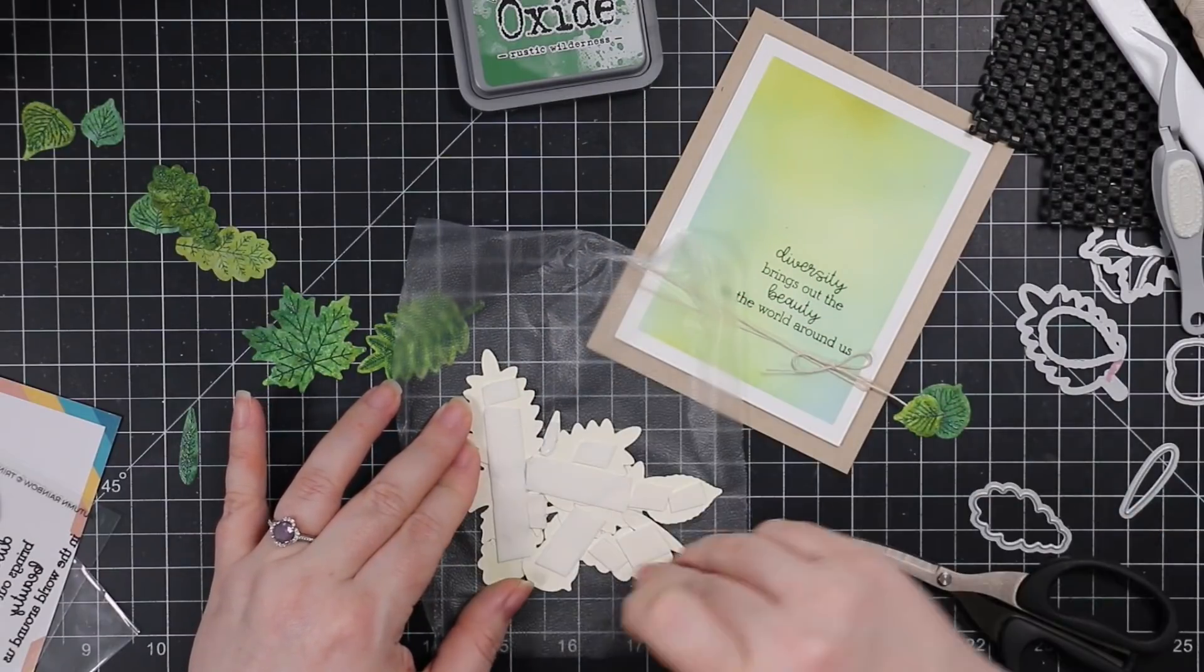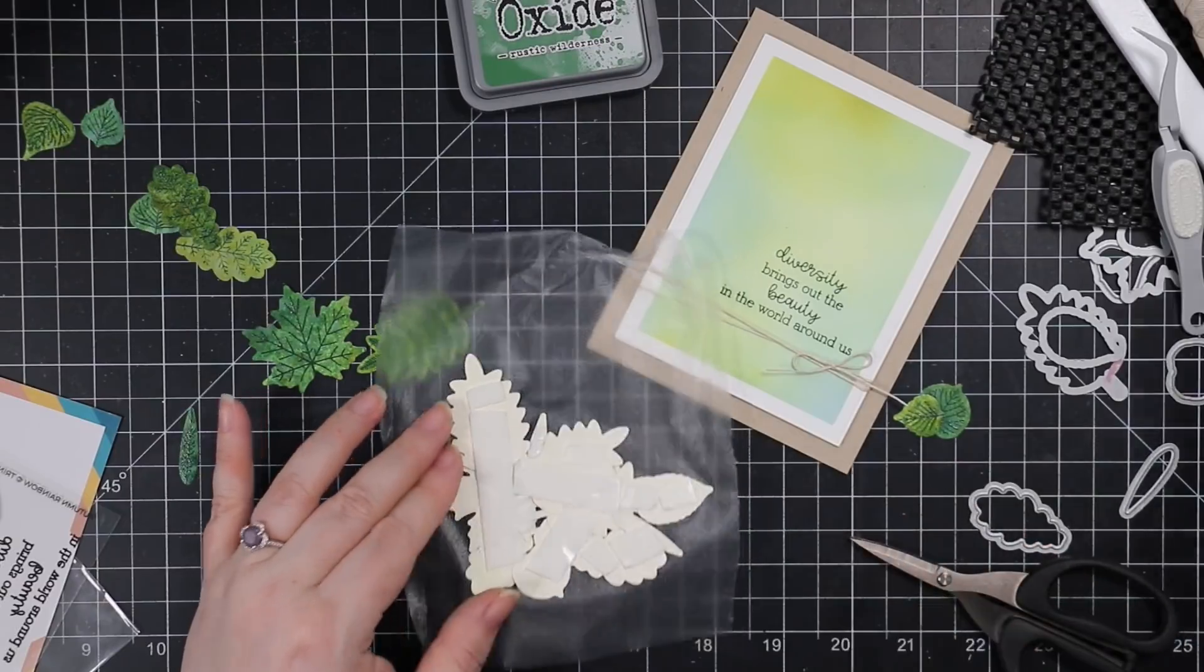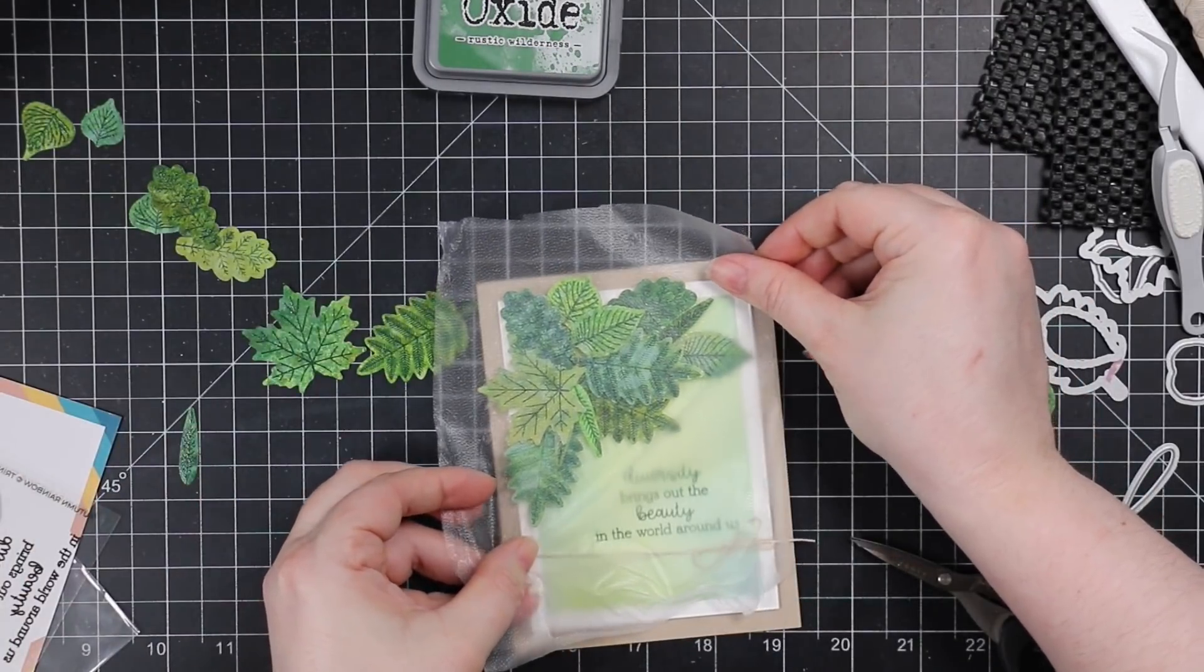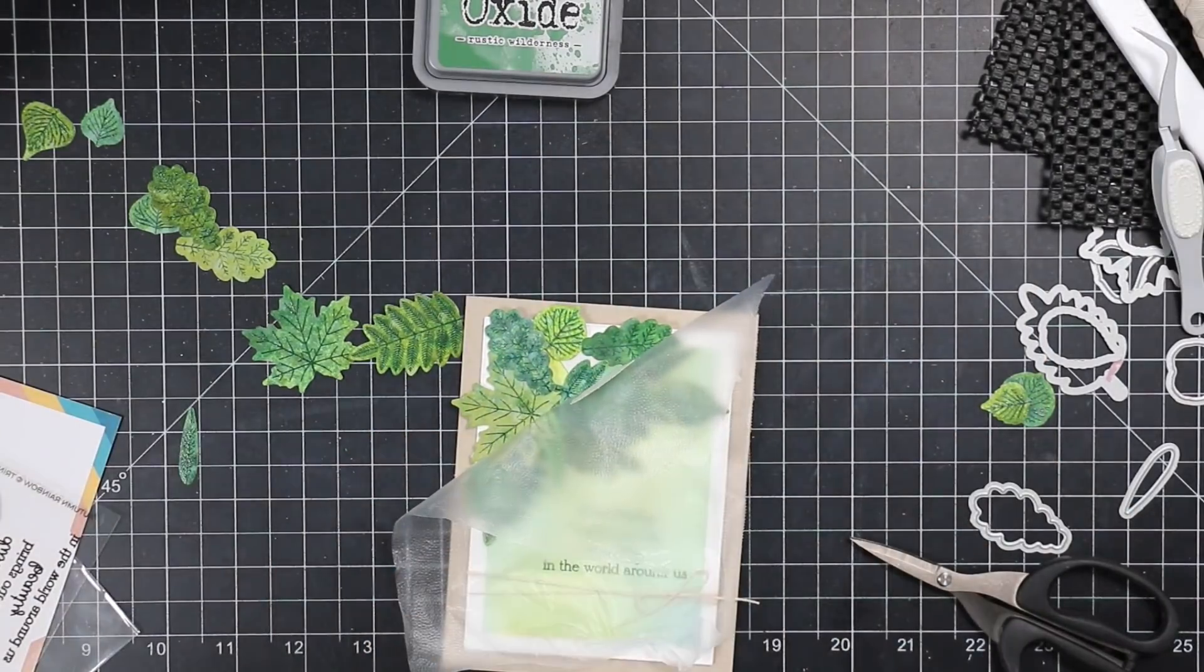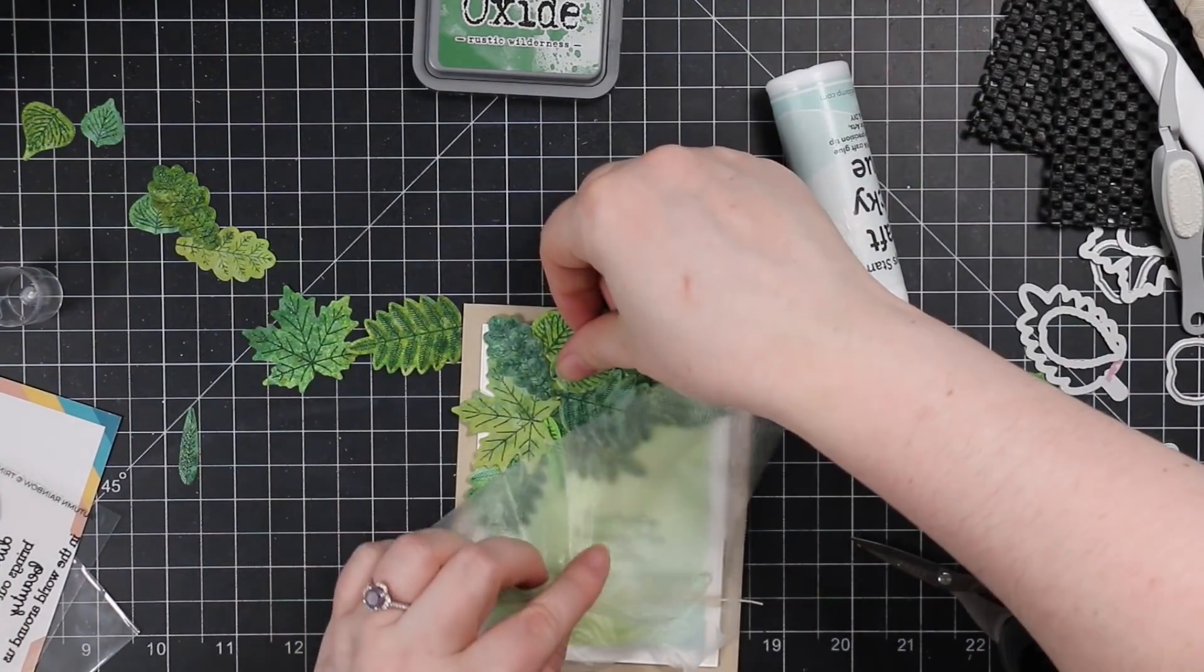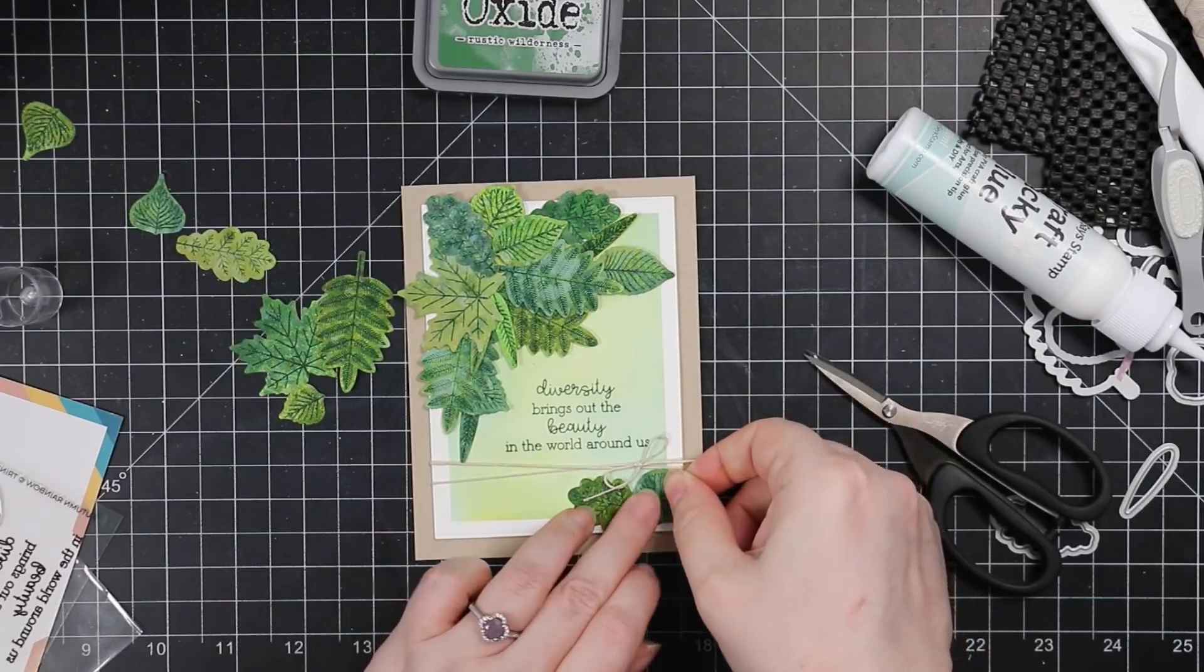And then once I've got the foam tape in place, I can peel off the backing. And then I basically just use the press and seal as a handle to rearrange, like replace it, center it, onto my card front. And then I just press it down. And then that one little leaf that wasn't fully adhered, I just used a little bit of craft glue to actually press that into place and done love.